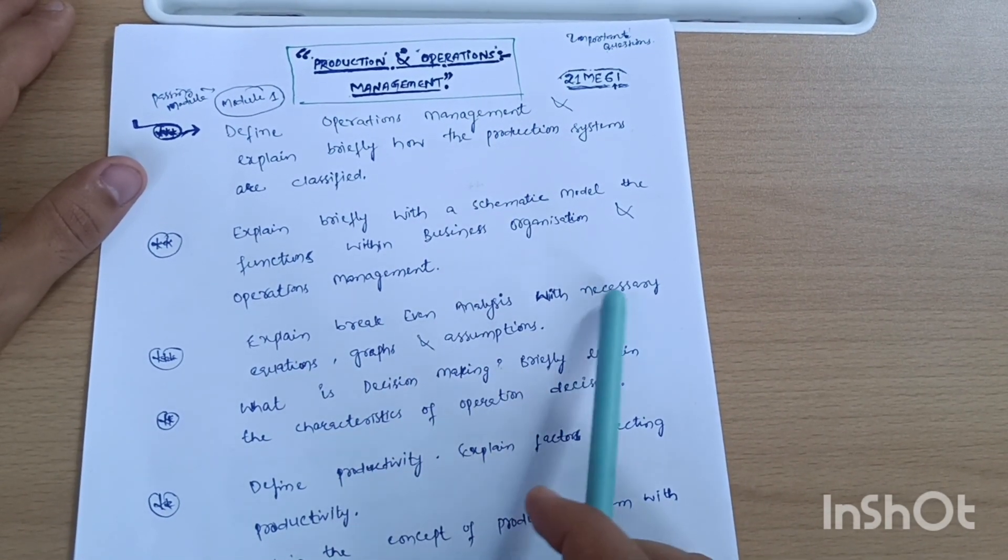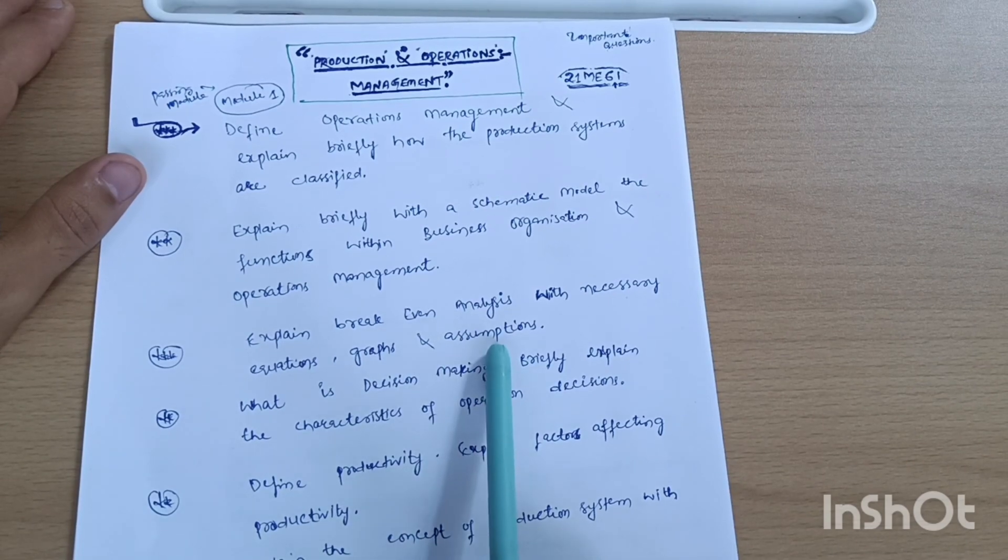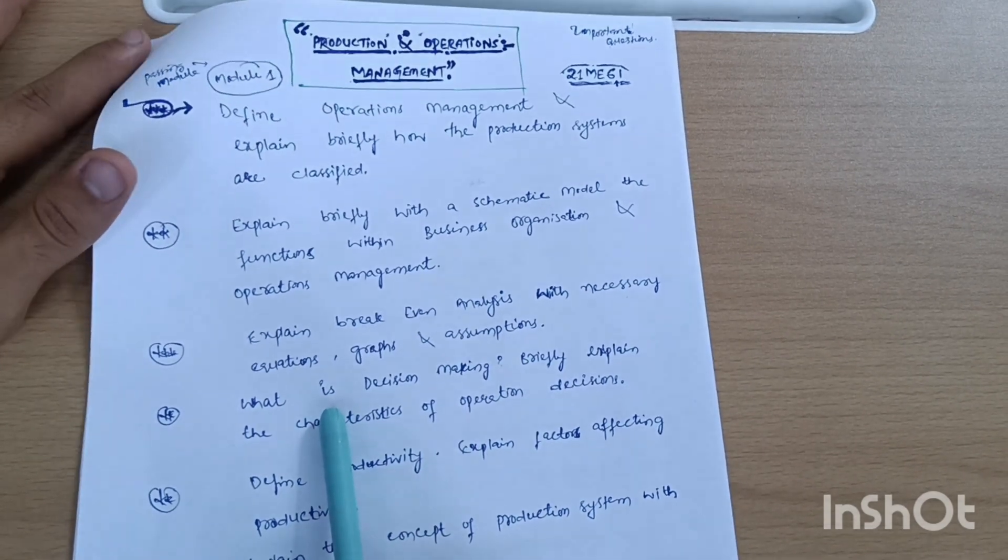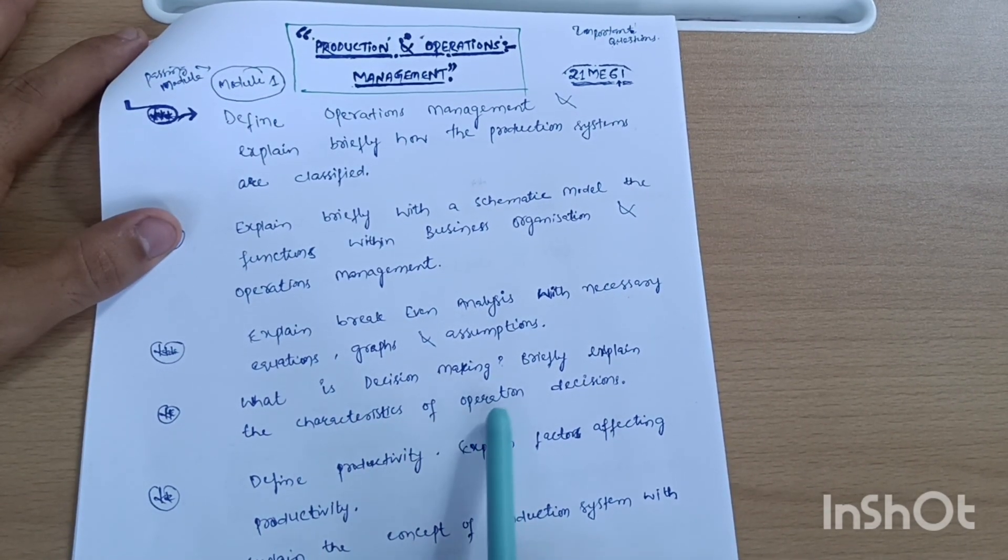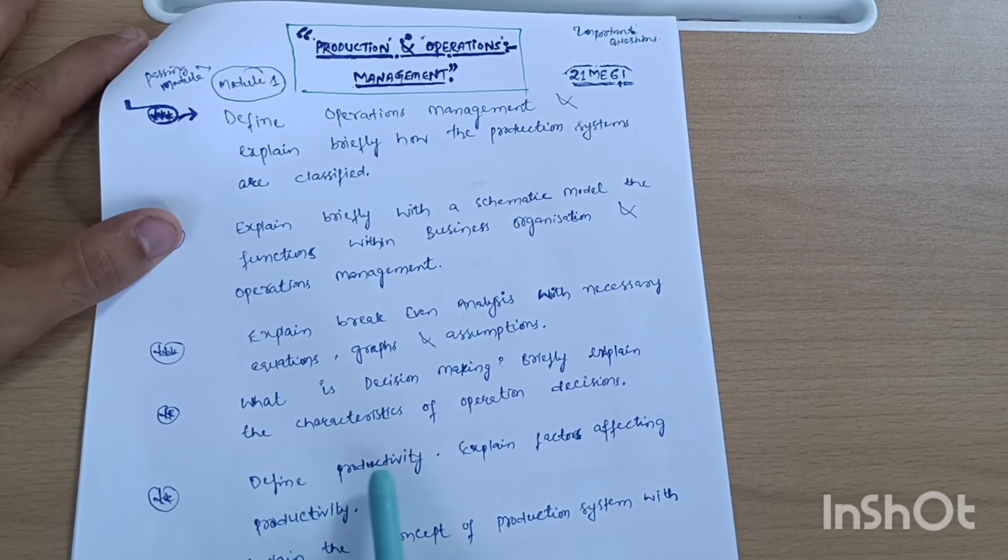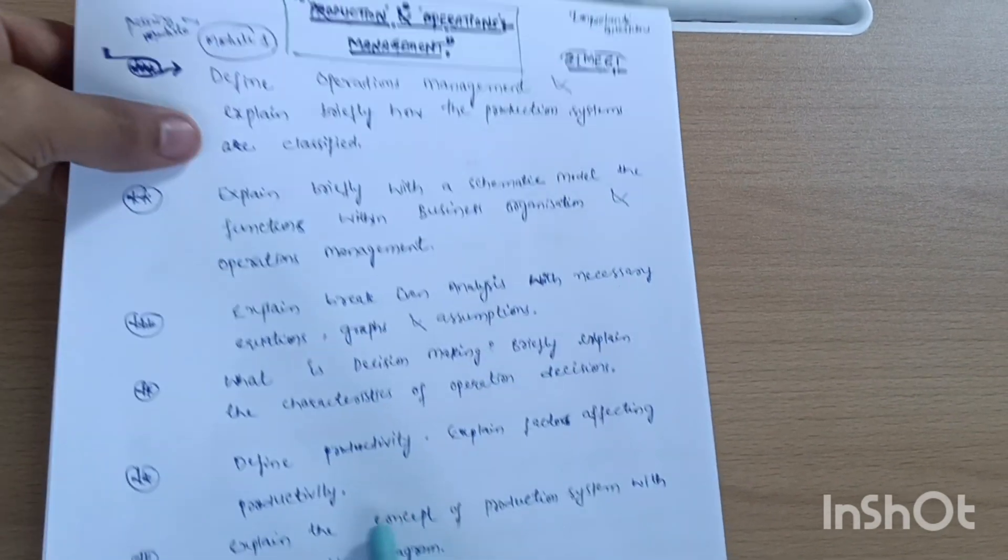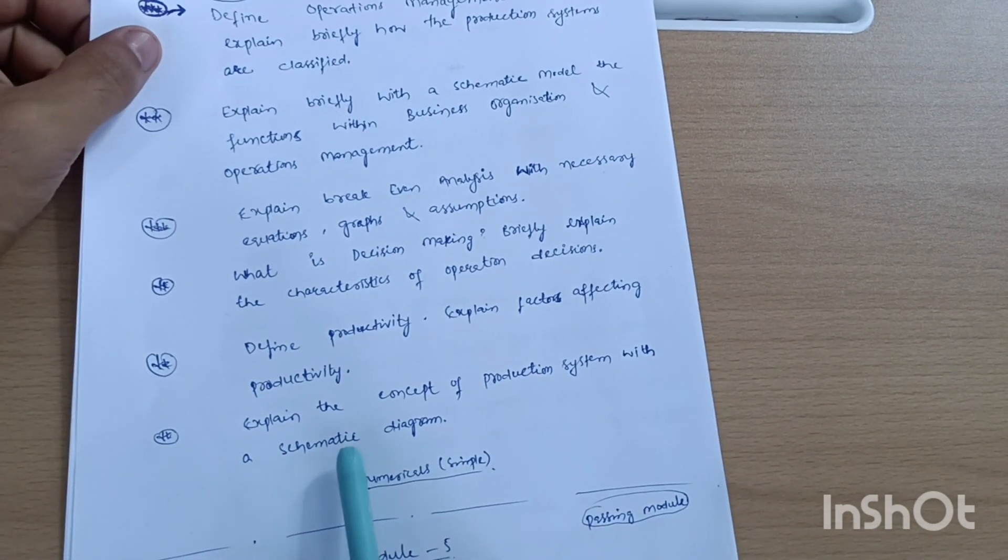What is decision making? Briefly explain the characteristics of operation decision. Define productivity, expand factors affecting productivity, and expand the concept of production system with a systematic diagram.